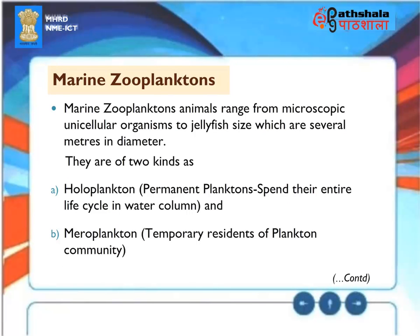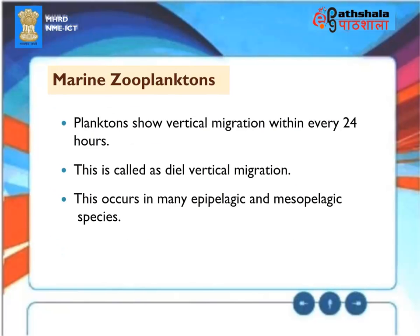Marine Zooplanktons: Marine zooplankton animals range from microscopic unicellular organisms to jellyfish size, which are several meters in diameter. They are of two kinds: Holoplankton — permanent planktons that spend their entire life cycle in the water column — and Meroplankton — temporary residents of the plankton community. Planktons show vertical migration within every 24 hours, called diel vertical migration. This occurs in many epipelagic and mesopelagic species.